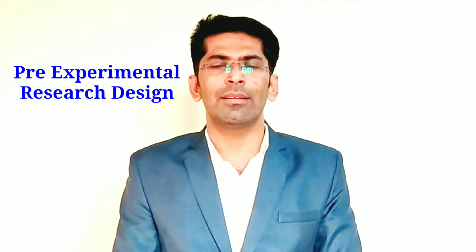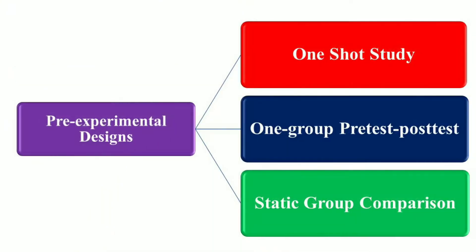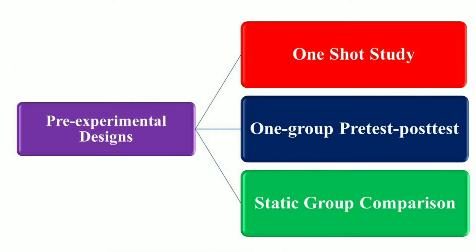This design is usually conducted as a first step toward establishing the evidence for or against an intervention. There are three types of pre-experimental design: namely one-shot case study design, one-group pre-test post-test design, and static group comparison.